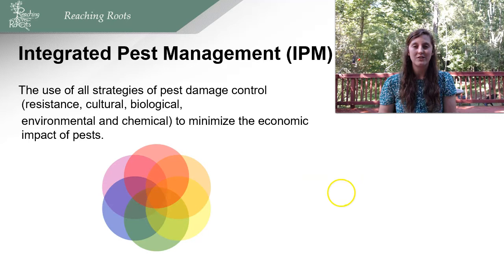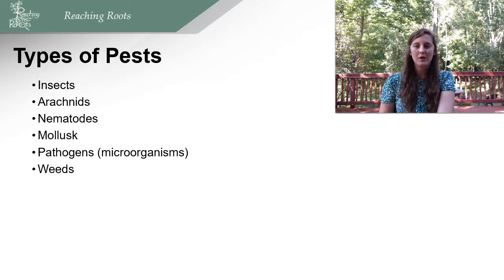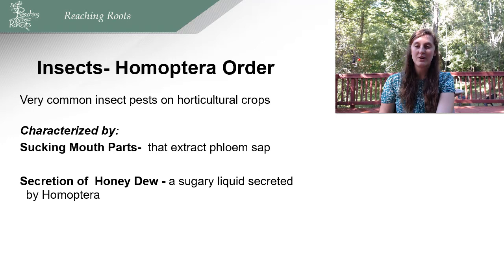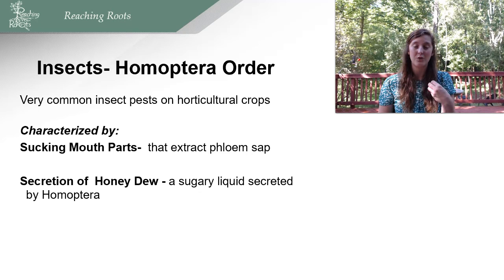Now let's talk about specific pests: insects, arachnids, nematodes, mollusks, pathogenic microorganisms, and weeds. An insect is characterized by six legs, three body regions — head, thorax, abdomen — one pair of antennae, and wings. Insects, especially the Hemiptera order, are very common insect pests on horticulture crops. They're characterized by sucking mouth parts — they extract phloem sap, stealing the sugar the plant worked hard to create through photosynthesis.